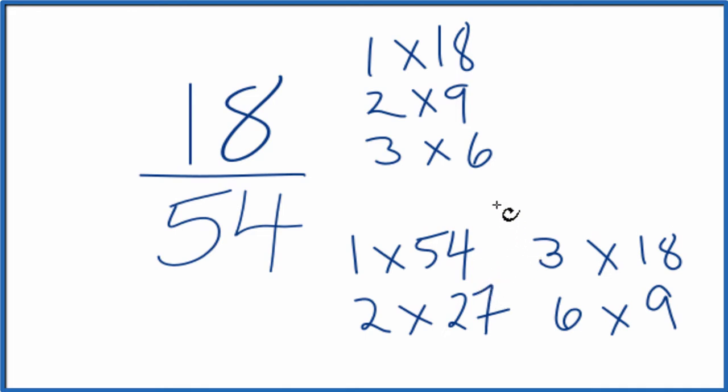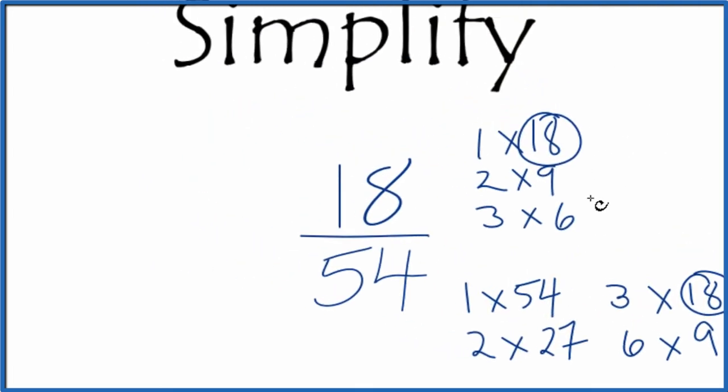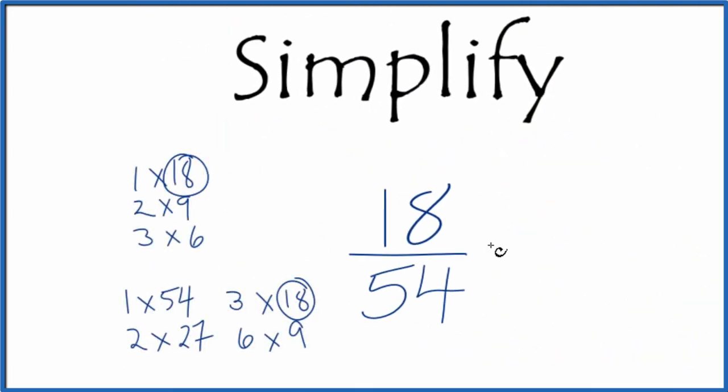We're looking for the greatest common factor. That turns out to be actually 18. So if we divide 18 by 18 and 54 by 18, we'll have simplified 18/54. Let's move these over here. So 18 divided by 18, that's just 1, and 54 divided by 18, that gives us 3. So we've simplified 18/54 down to 1/3, and we can't reduce this any further.